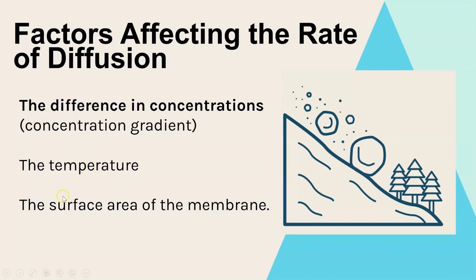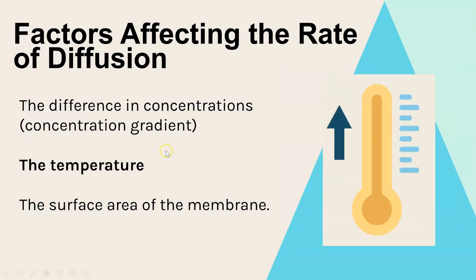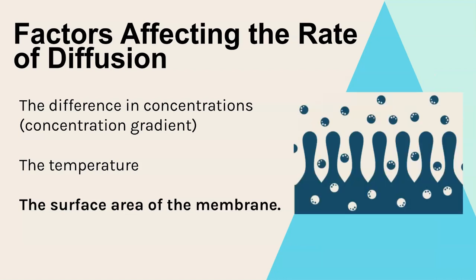There are three factors that will increase the rate of diffusion: the concentration gradient, the temperature, and the surface area of the membrane. The steeper the concentration gradient, the faster diffusion will happen - like snowballs rolling down a hill, the steeper the gradient the faster they roll. The higher the temperature, the more kinetic energy the particles have, so they move faster and diffusion happens faster. Lastly, the larger the surface area of the membrane, the faster diffusion will happen because there is more space for those particles to move through.